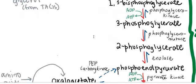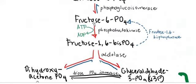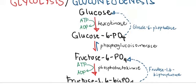We need two more enzymes in gluconeogenesis. To reverse step 3, we need the enzyme fructose-1,6-bisphosphatase. To remember this, if you memorize the intermediates of glycolysis, all you have to do is add '-ase.' So to convert fructose-1,6-bisphosphate to fructose-6-phosphate, you need fructose-1,6-bisphosphatase. And for the last irreversible step, to convert glucose-6-phosphate to glucose, the enzyme is glucose-6-phosphatase.